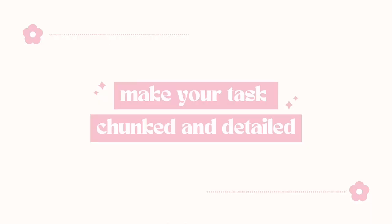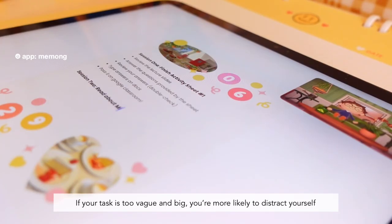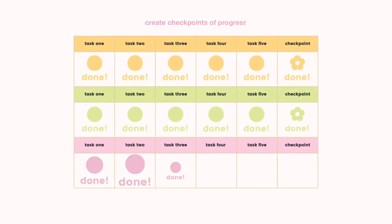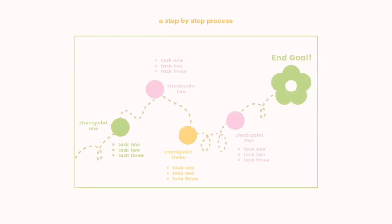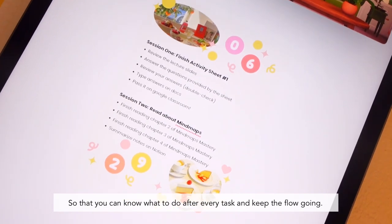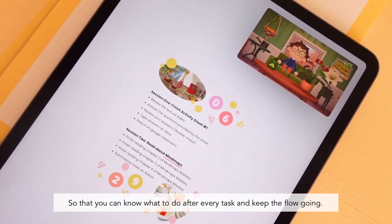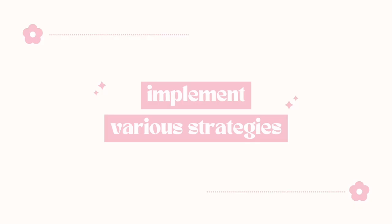To further amplify your productivity, make your tasks chunked and detailed. If your task is too vague and big, you're more likely to distract yourself. Chunk it down — create checkpoints of progress, a step-by-step process, so that you know what to do after every task and keep the flow going. You can also implement various strategies and methods to be efficient in your session.